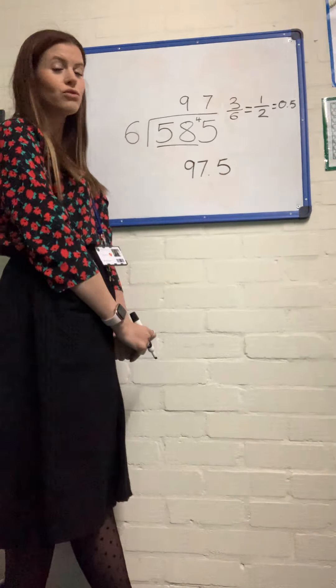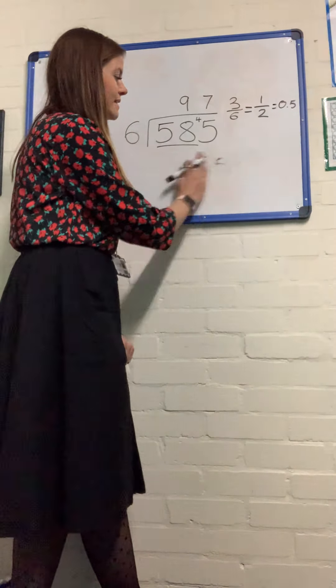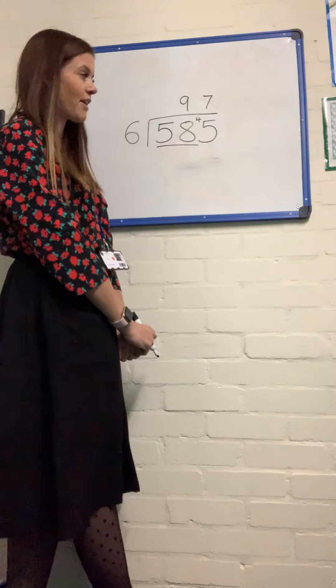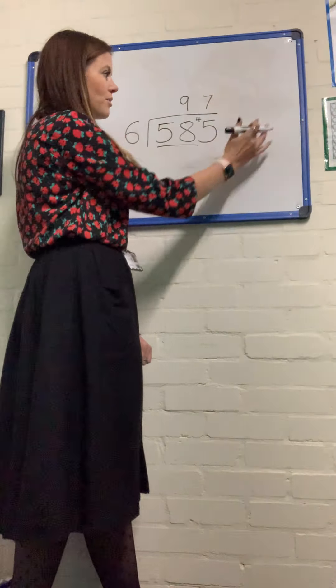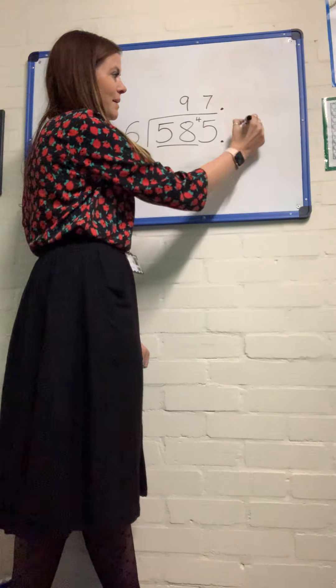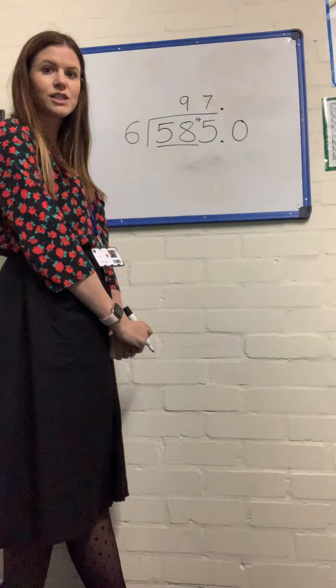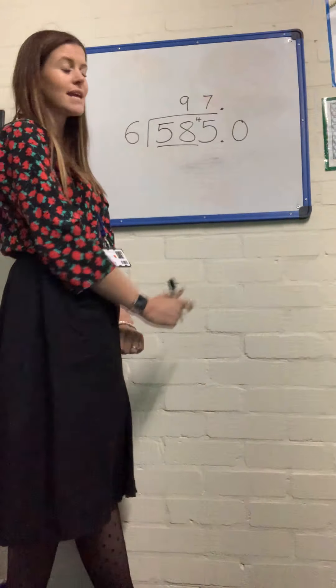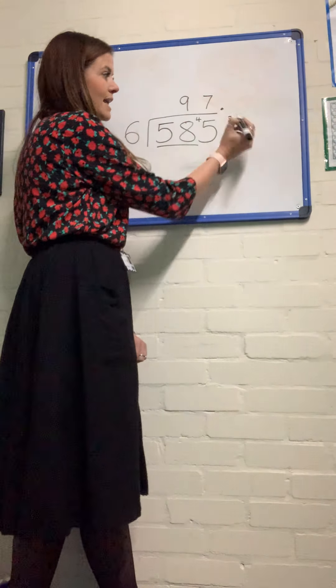Another way, if I was unsure on the fraction, I can carry on my thinking by putting a decimal point here and extending my dividend. So I'm now going to go in the tenths column. And with my remainder, which was remainder 3, I'm going to put my 3 here.